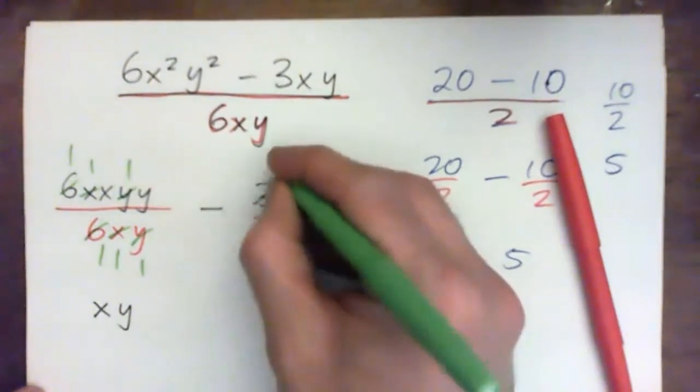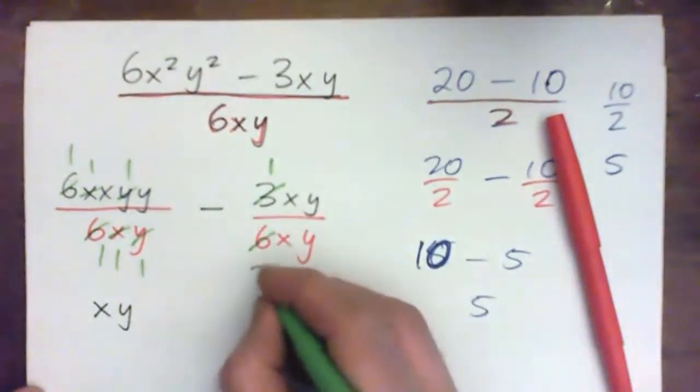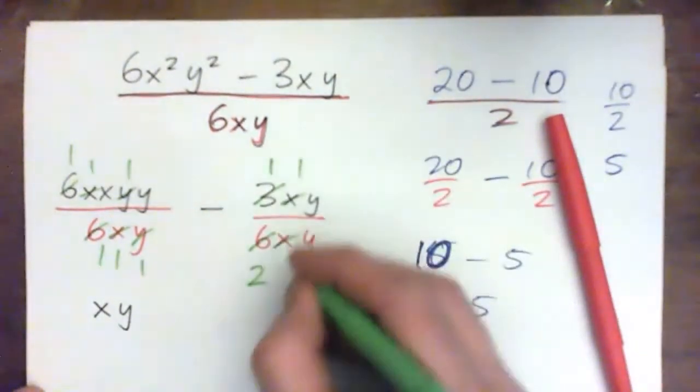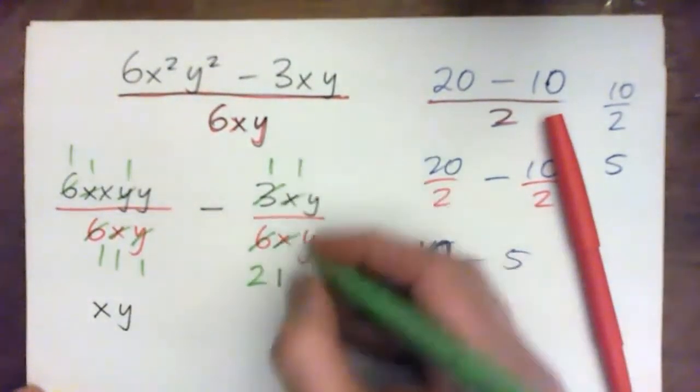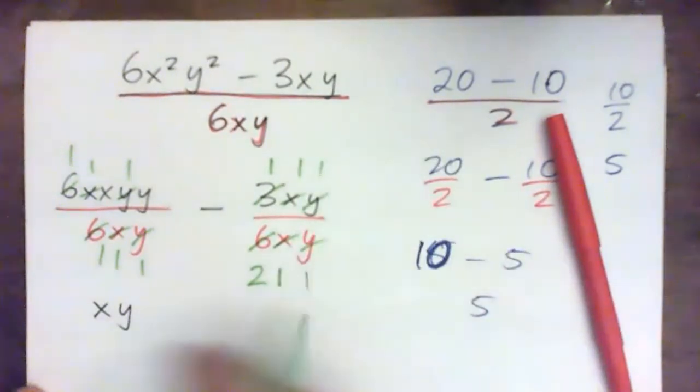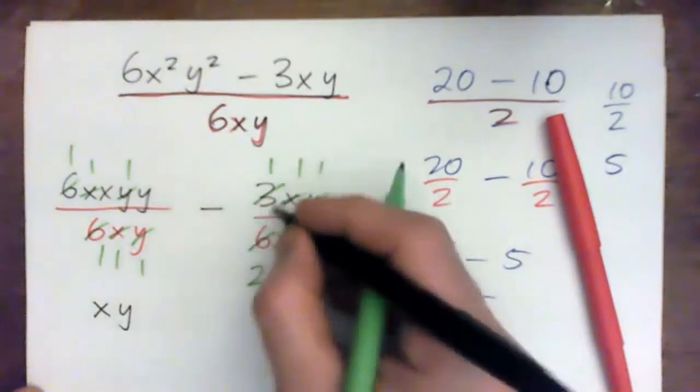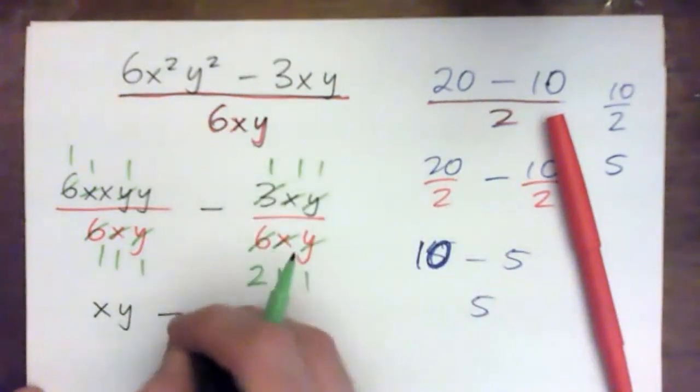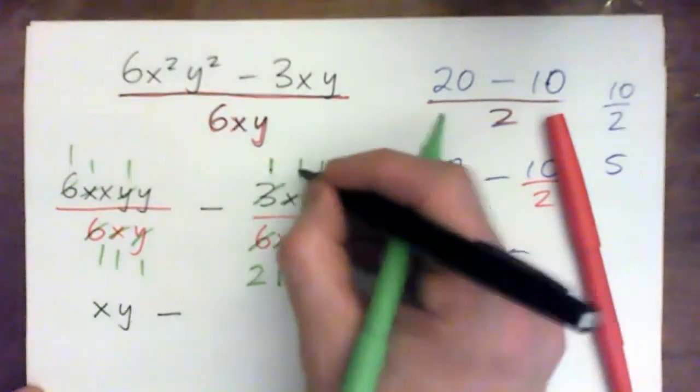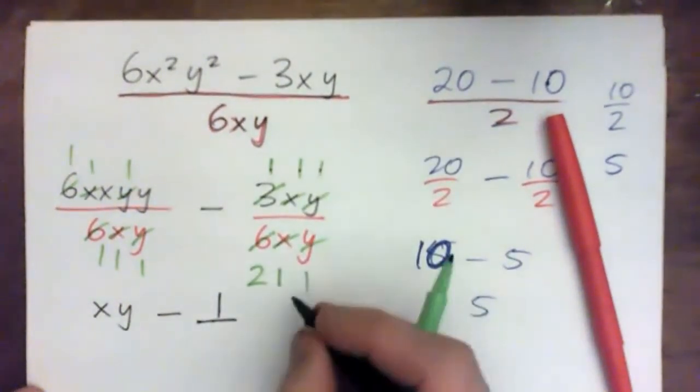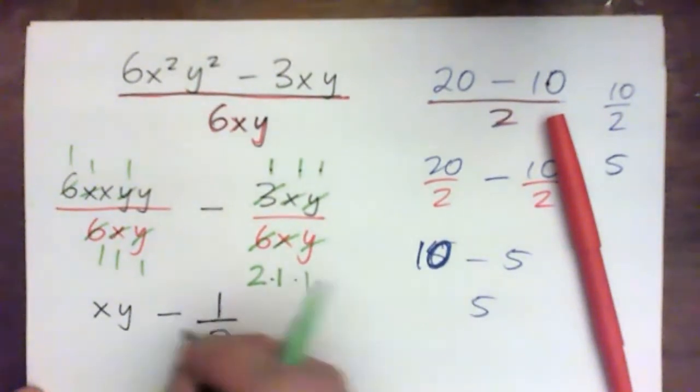And then the 3 goes into itself once, and 3 into 6 goes twice. And then x into x goes once, x into x goes once. So the x's cross-cancel. Y into y goes once, y into y goes once. So I'm getting just a subtract here, there's no other negative. So this is just a negative. And it's 1 times 1 times 1, 1 on the top. And on the bottom, 2 times 1 times 1, 2 on the bottom. So it's xy minus 1 half.